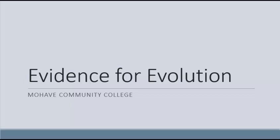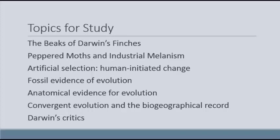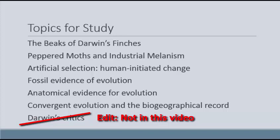Evidence for evolution. We're going to discuss the beaks of Darwin's finches, peppered moths, artificial selection, fossil evidence, anatomical evidence, convergent evolution, and finally a little bit on Darwin's critics — we're just going to brush over the top of each of them.